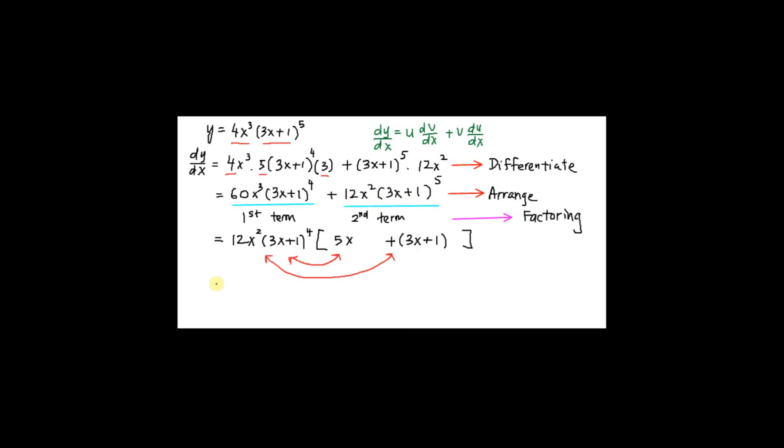So the next step, we simplify everything. We have 12x squared times 3x plus 1 power 4, 5x plus 3x, I have 8x plus 1. That is the final answer for the derivative.